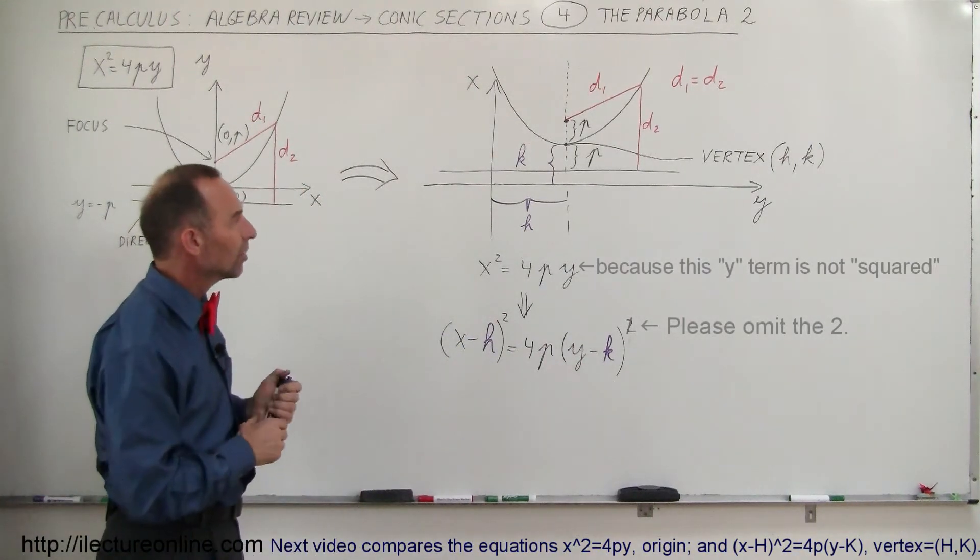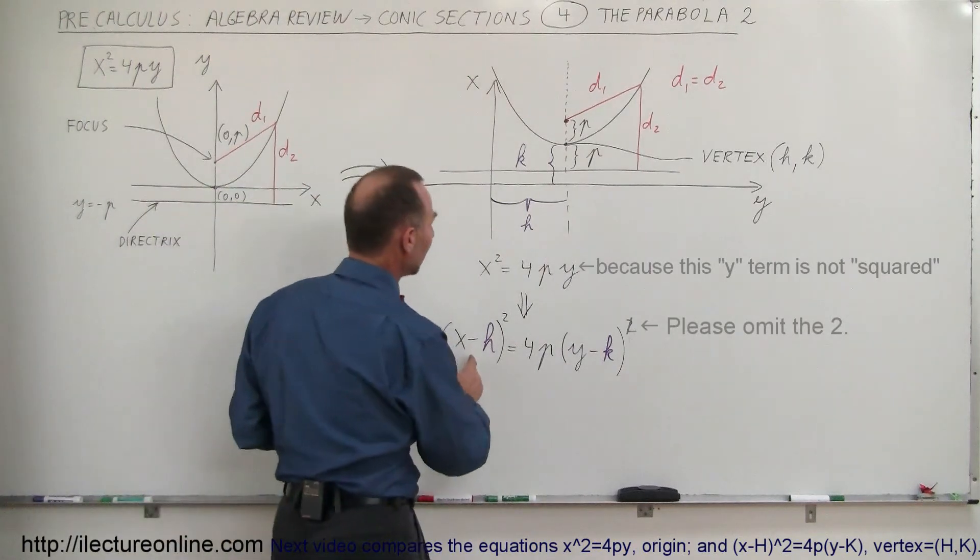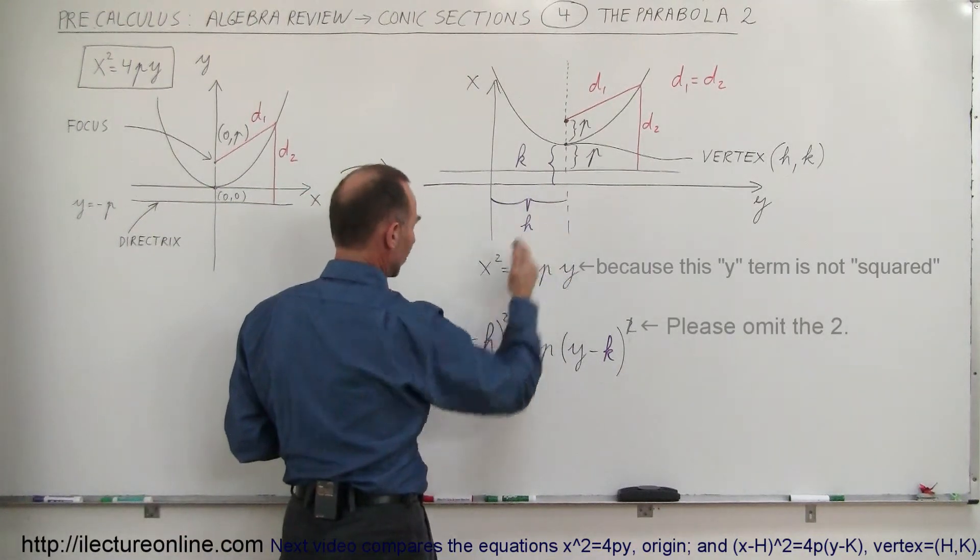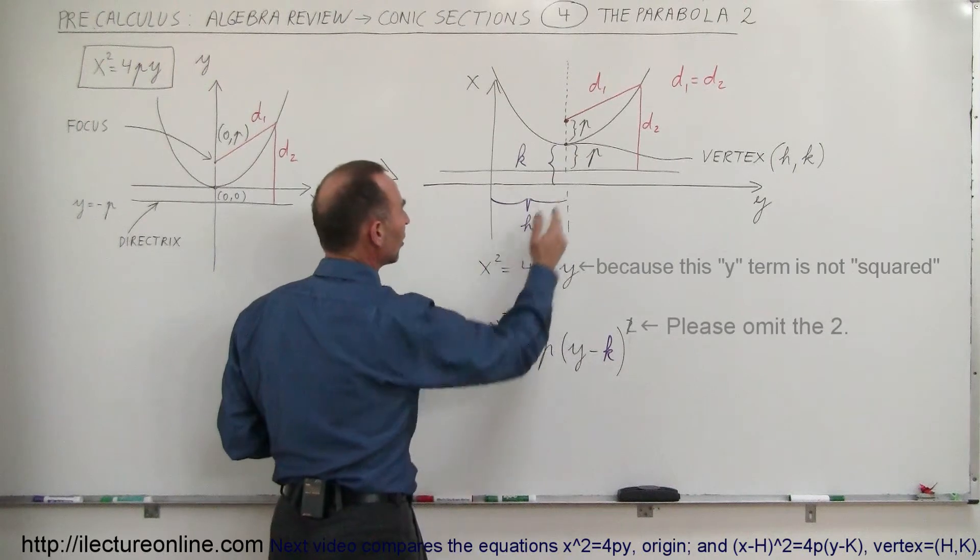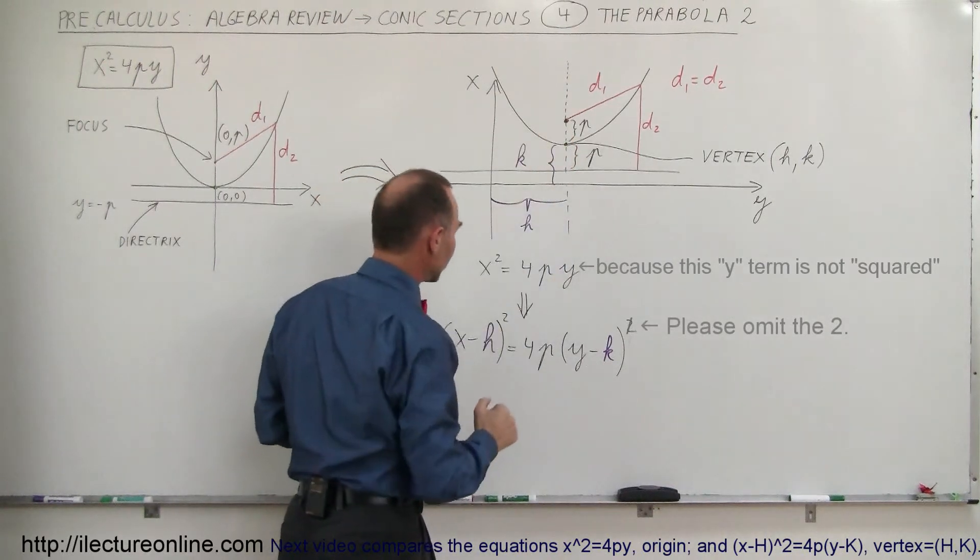Does that make sense? Well, let's see here. If x is equal to h, h minus h is zero. That would put us right at the vertex just like before.